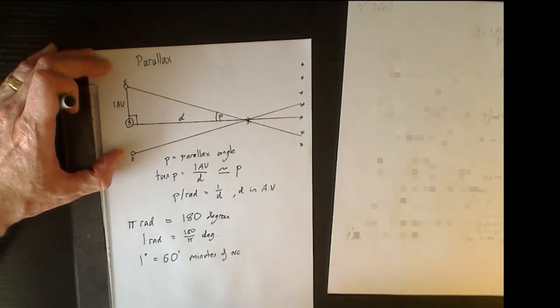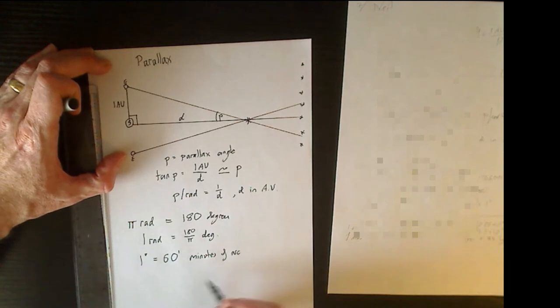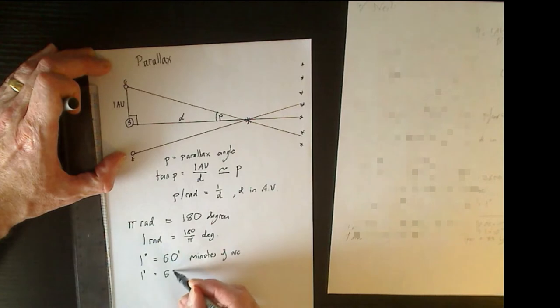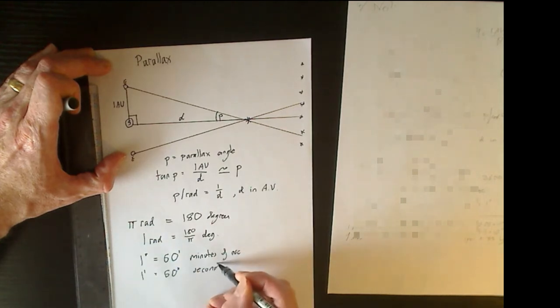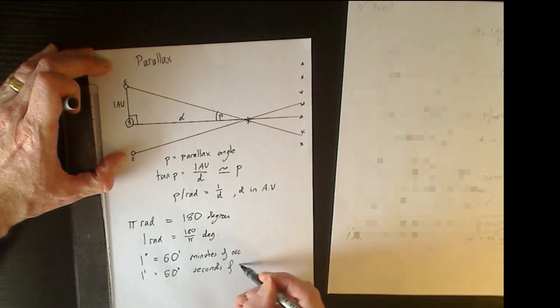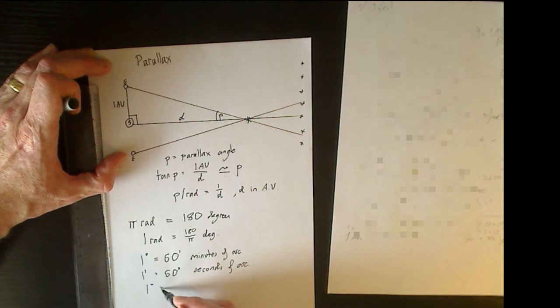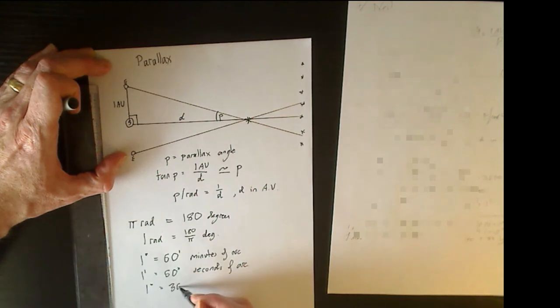But even the minutes of arc are split further, so that one minute of arc is split into 60 seconds of arc. So one degree is therefore 3600 seconds of arc.